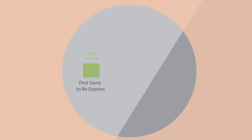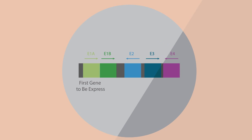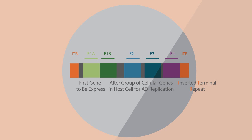Once adenovirus enters a host cell, the first gene to be expressed is the E1A gene. The presence of the E1A gene triggers the expression of the delayed early genes E1B, E2, E3, and E4 transcription units. The expression of adenoviral E1B, E2, E3, and E4 genes will alter the expression of a group of cellular genes in the host cell to facilitate adenovirus replication. ITR refers to the inverted terminal repeat sequences at the end of each genome, which contains all the elements necessary for replication and packaging.